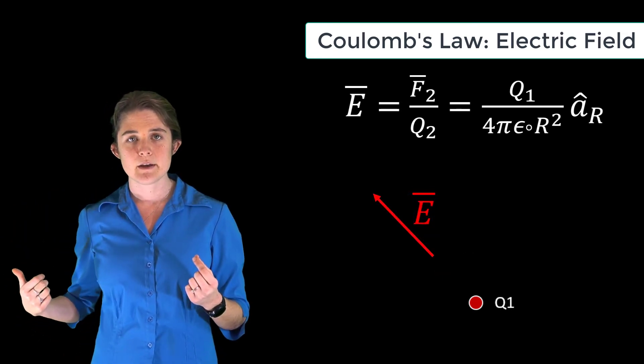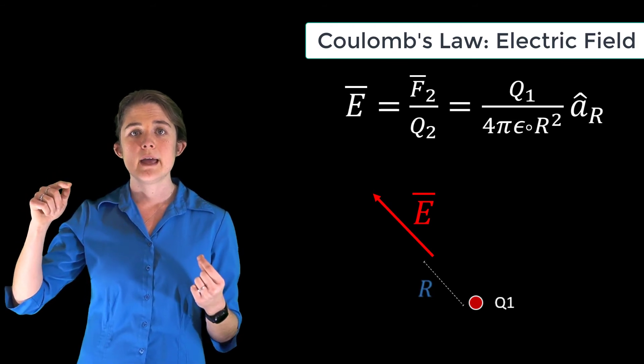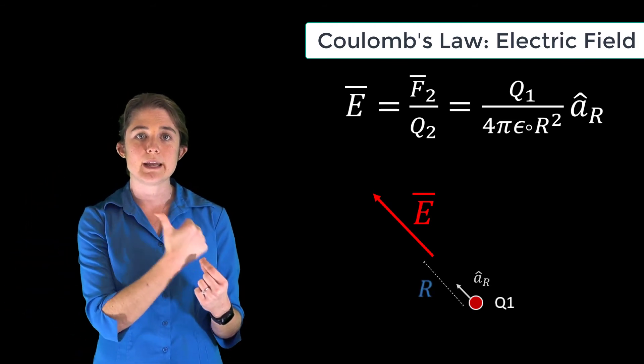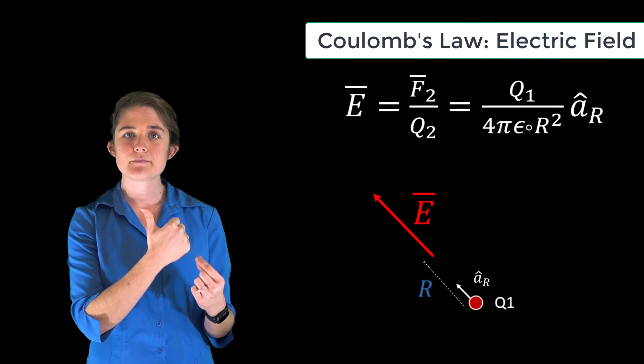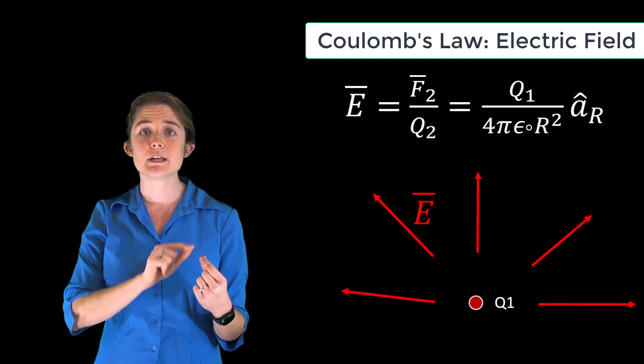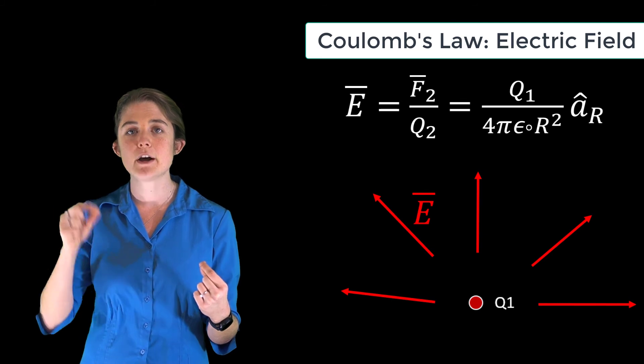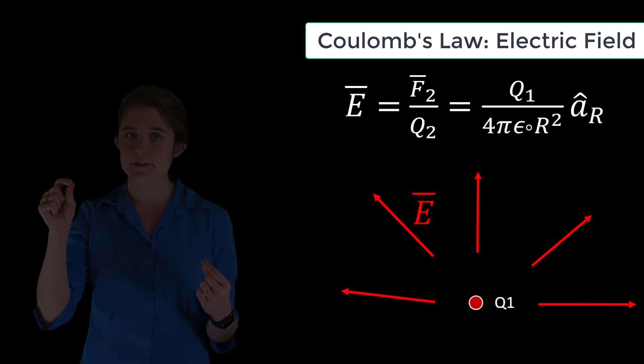r is the distance measured away from q1, and the unit vector âr is pointing outward from q1. So the electric field only depends on q1, the field source, not on q2, the test charge.